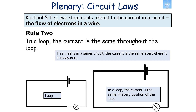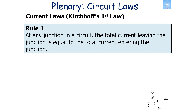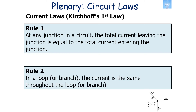The second rule links to one loop: in one loop or one branch, the current is the same throughout. So in a series circuit, the current is the same everywhere it is measured. For example, it's 10 amps at the battery, 10 amps at the bulb, and 10 amps in the wire. To recap: rule one — at any junction, total current in equals total current out; rule two — in a loop or branch, the current is the same throughout.